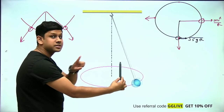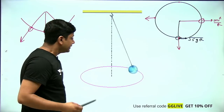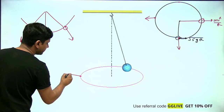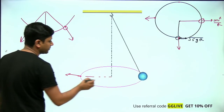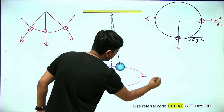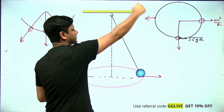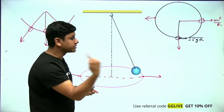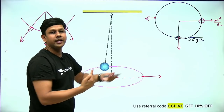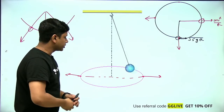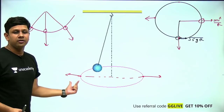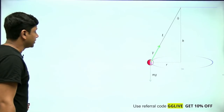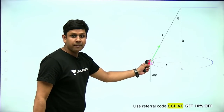This is the horizontal circle — not the vertical circle. Now if I draw the free body diagram, you can see something like this: this is your particle at this position.